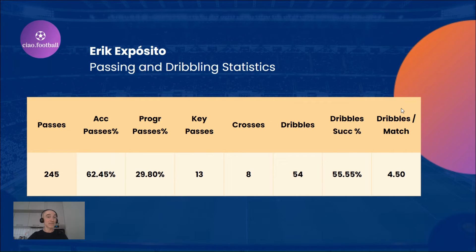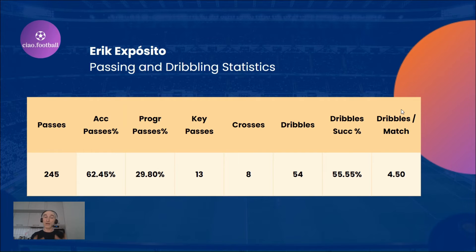Now let's jump to the passing and dribbling statistics, which you can see on your screen. His pass accuracy is 62%, his share of progressive passes is close to one third at 30%, he made 13 key passes, and his dribble success rate is 55.5%.